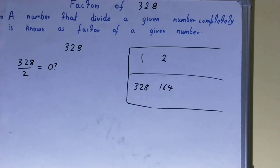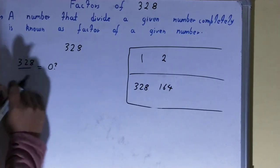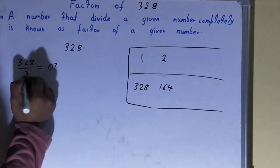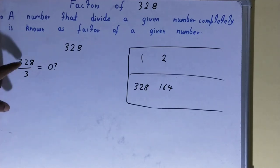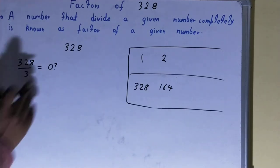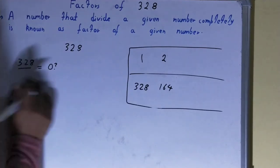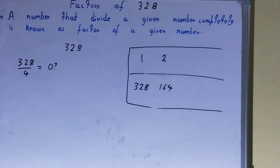2 times what equals 328? 2 times 164, so 164 will also be a factor. After 2, we check with 3. Is 328 divisible by 3? No, it is not divisible.